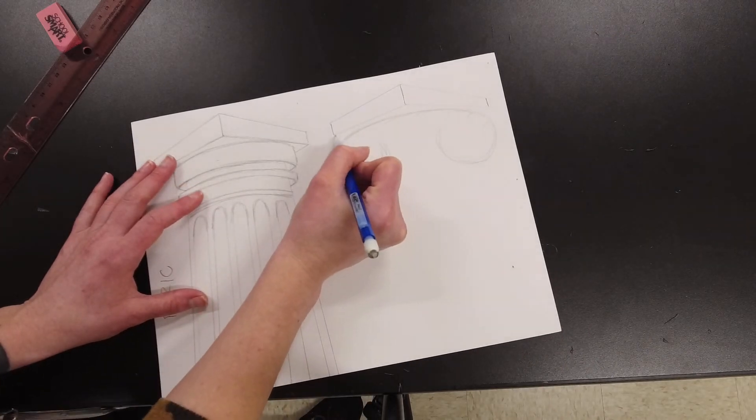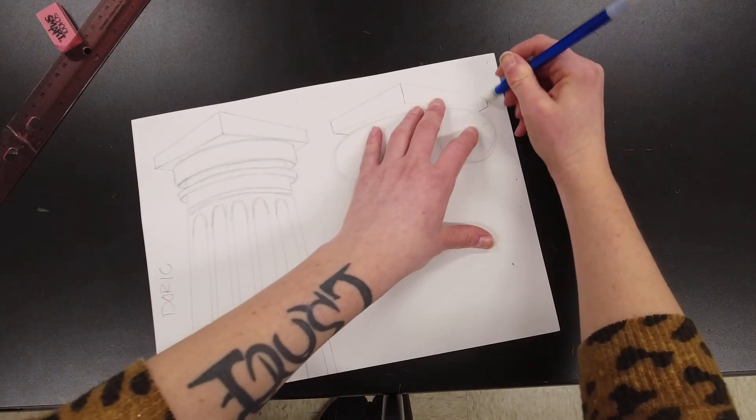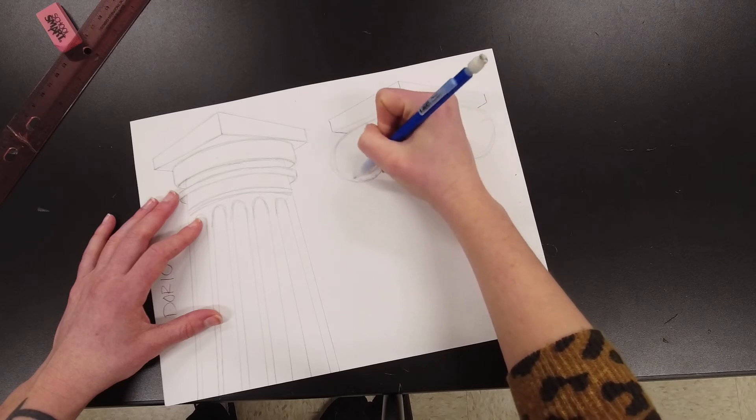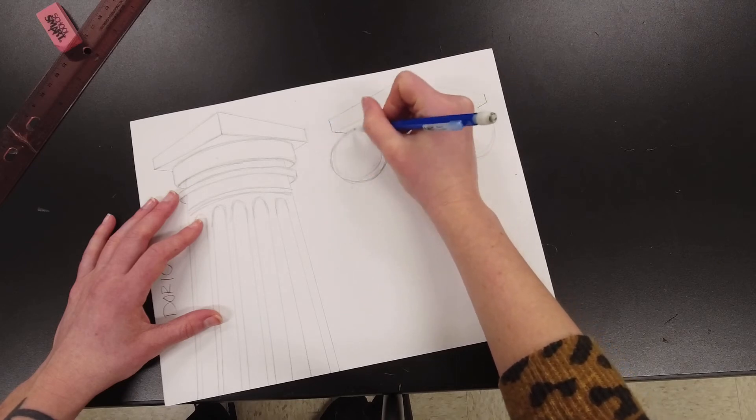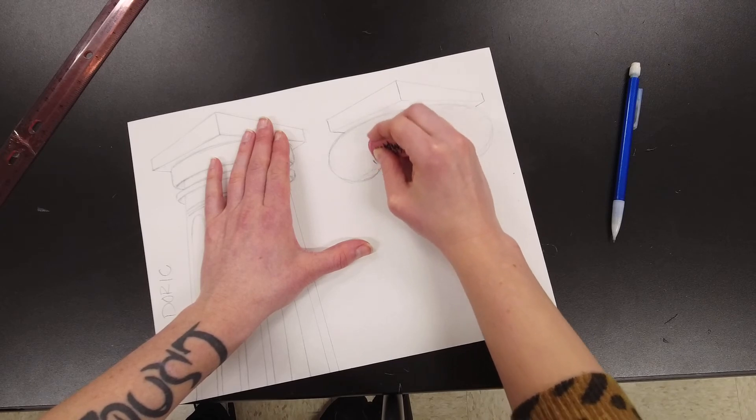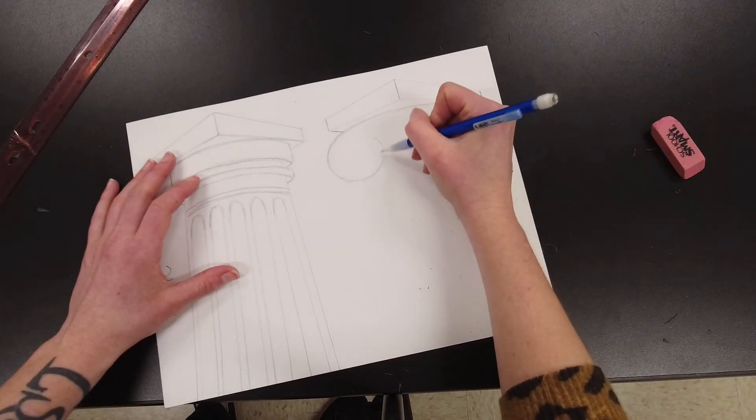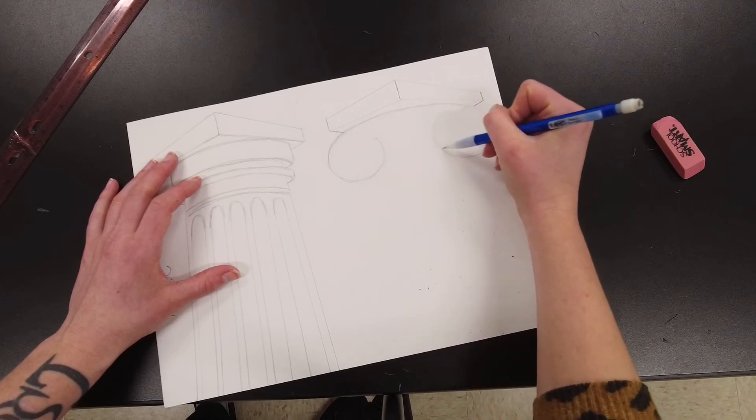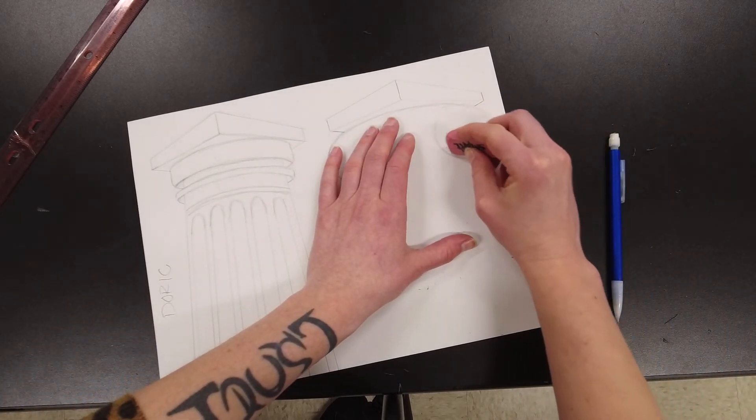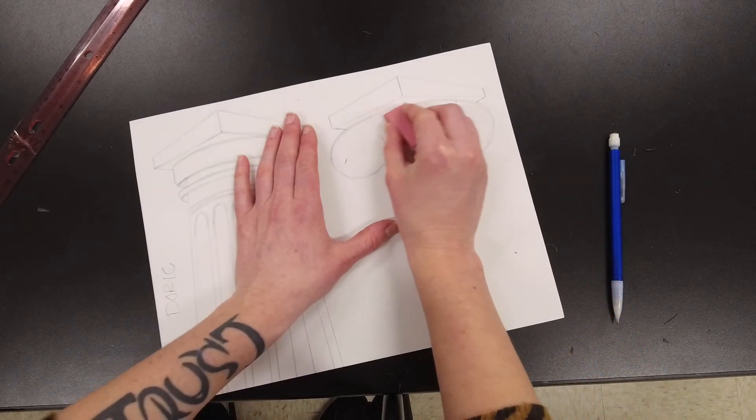I'm going to go ahead and put my diagonal lines in here to show that this part goes behind the little swirlies. Then I'm going to go ahead and just kind of clean this up and erase the part that I don't need, so that I know which part I'm using and which part I'm not. That's an example of sketching to sort of get the curve that you want.